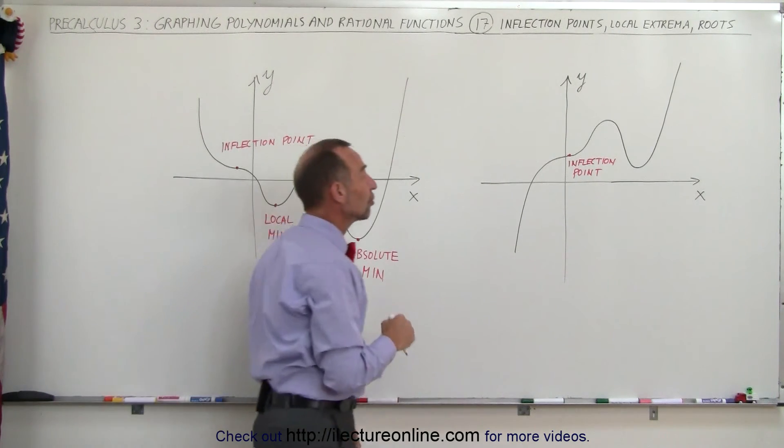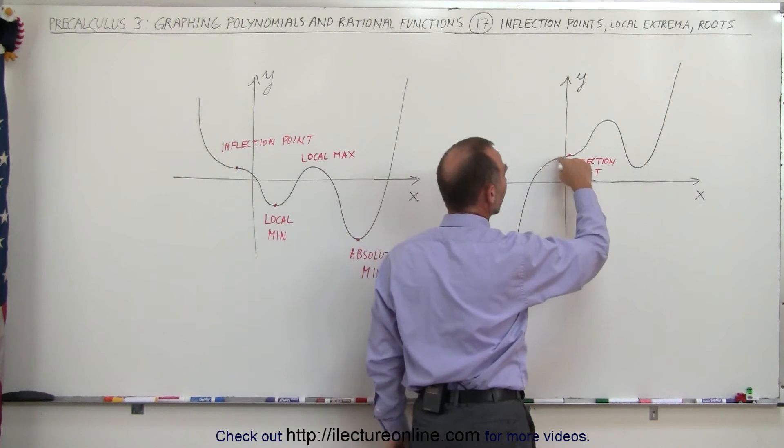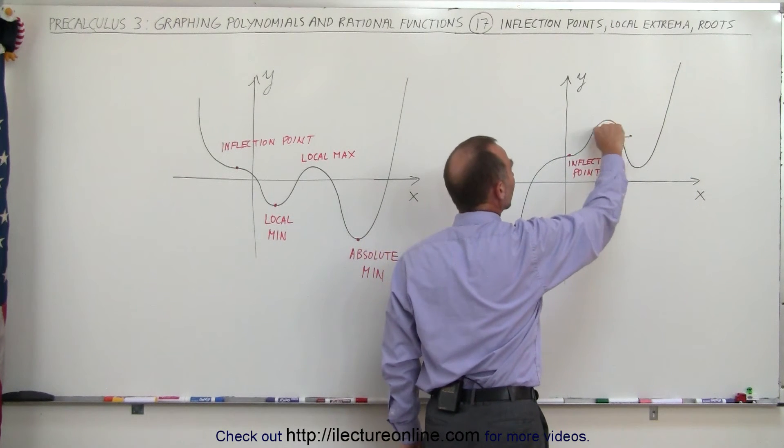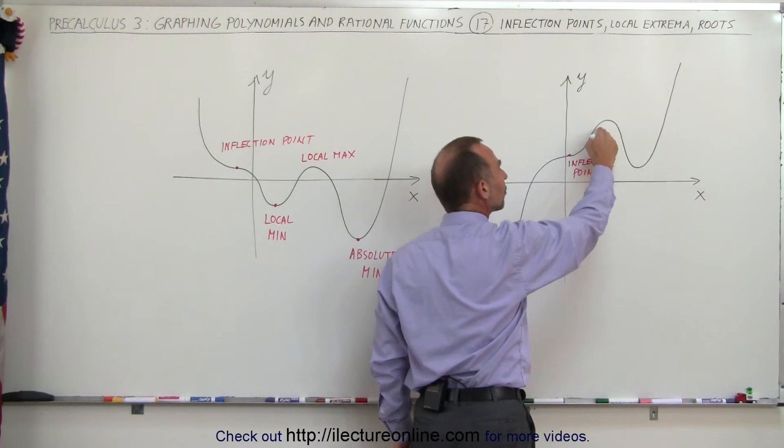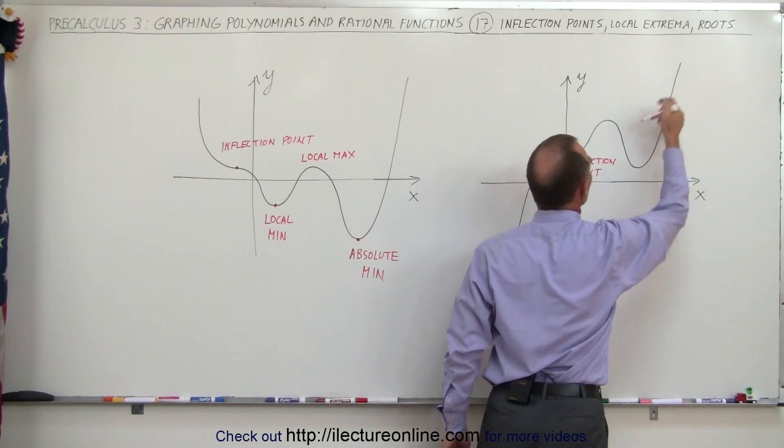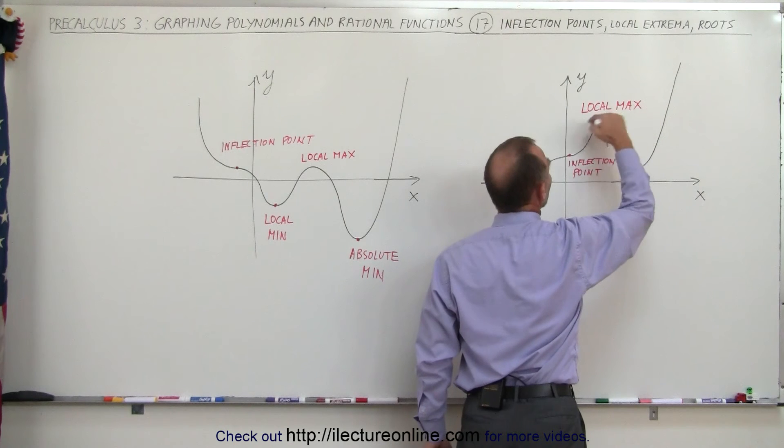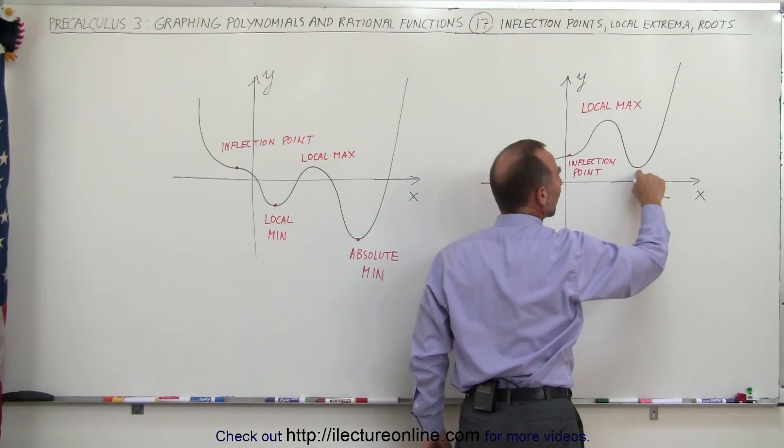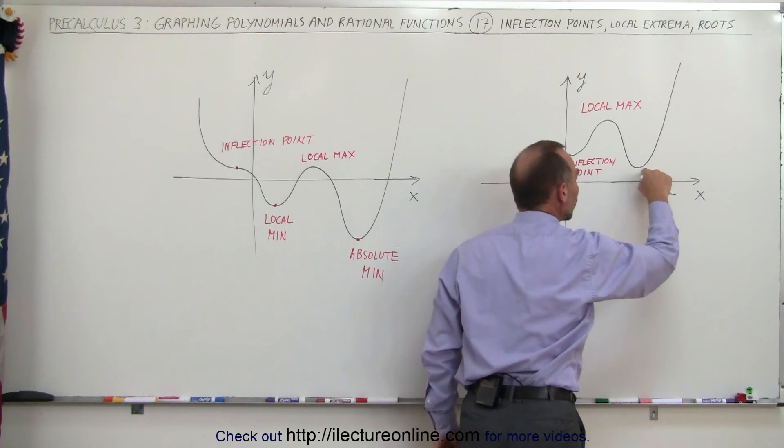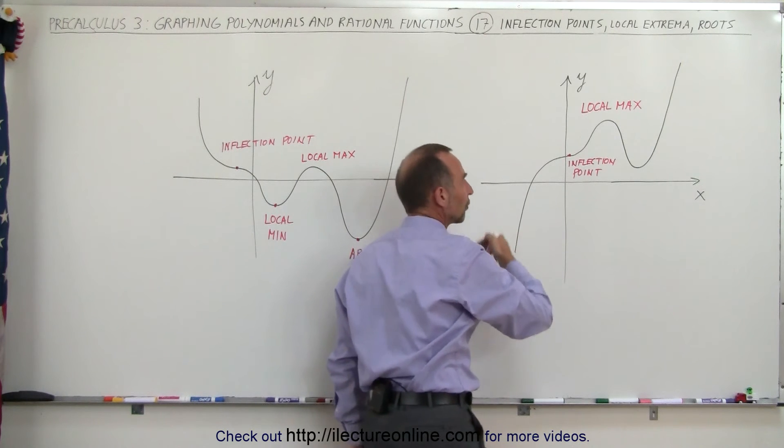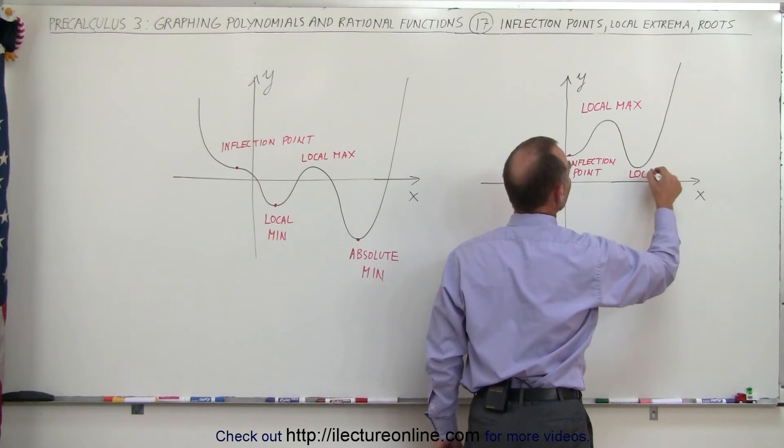On the right side here on this graph, notice we have an inflection point and it curves back up. Here we reach a maximum value but not the absolute highest maximum because it goes higher over here. So this is what we call a local max. Then it dips back down over here. Here we have a minimum point but not the lowest minimum because the curve goes lower over here. So this is what we call a local min.